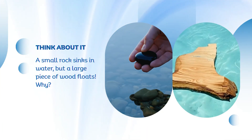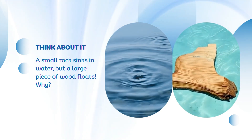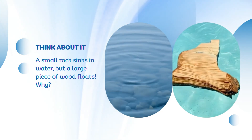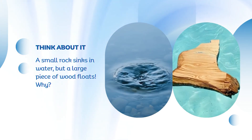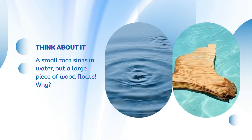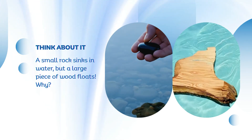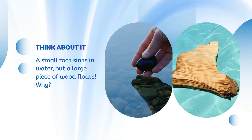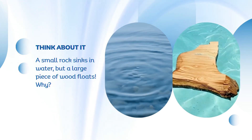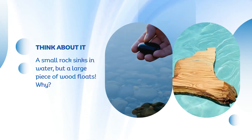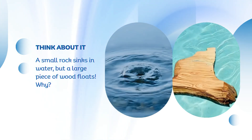Imagine dropping a small rock and a large piece of wood into water. Even though the piece of wood is bigger, it floats, while the smaller rock sinks to the bottom. That's because the rock's particles are packed more tightly together, giving it a higher density than water. The wood has more empty space between its particles — it's less dense than water, so it stays on the surface. This difference in how tightly matter is packed is what causes one object to float and the other to sink.